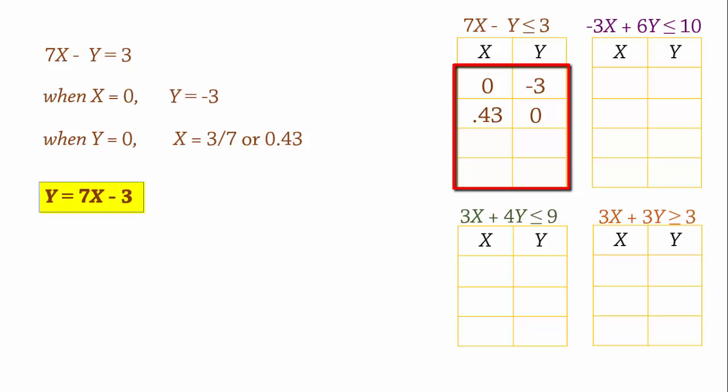We can now use trial and error to find better points. For example, when x equals 0.5, y also equals 0.5. And when x equals 1, y equals 4.